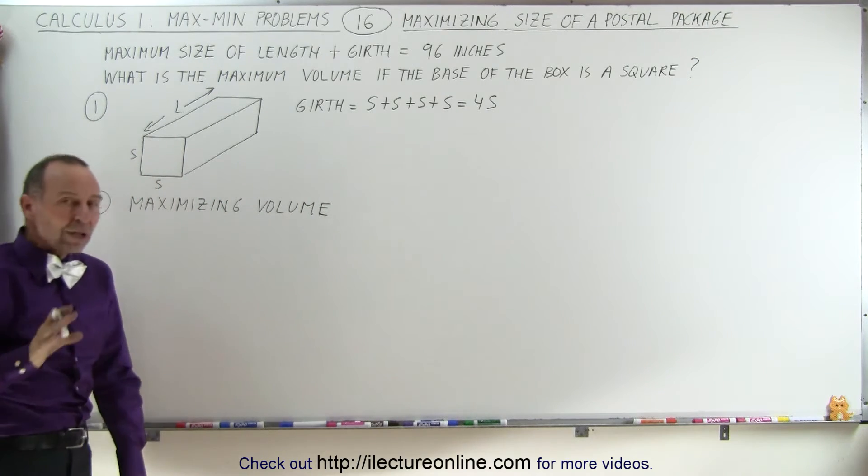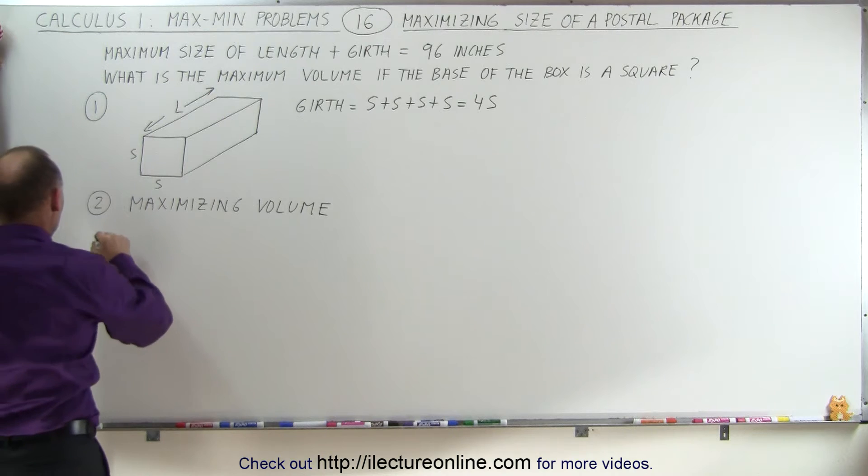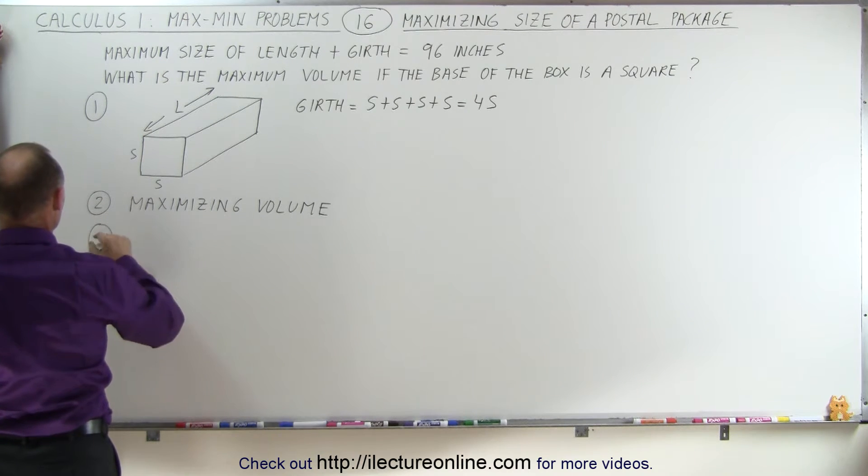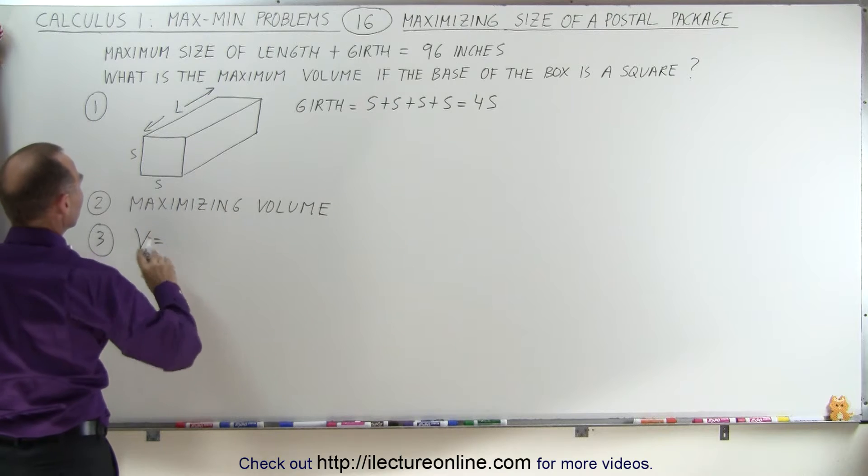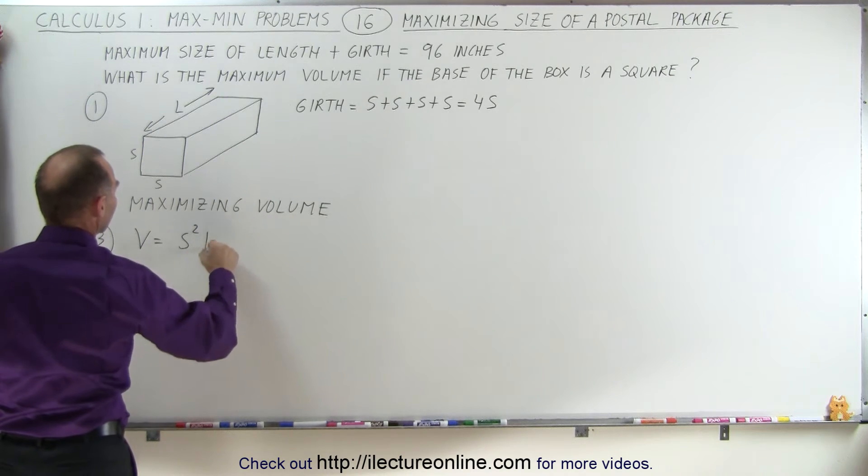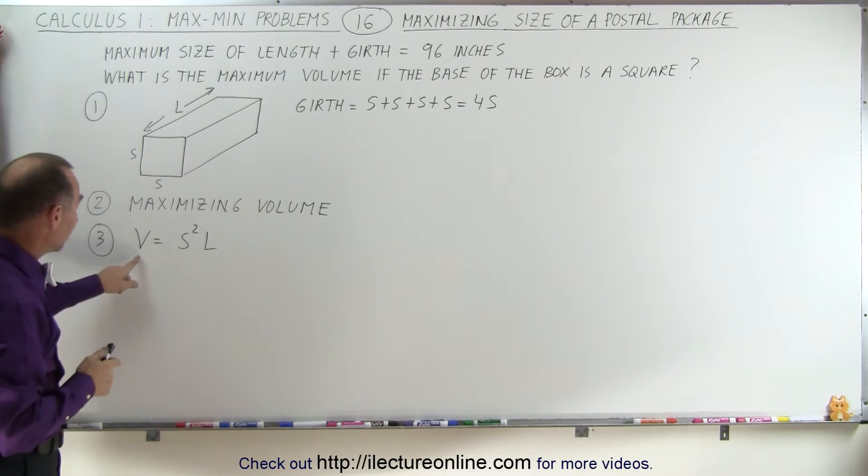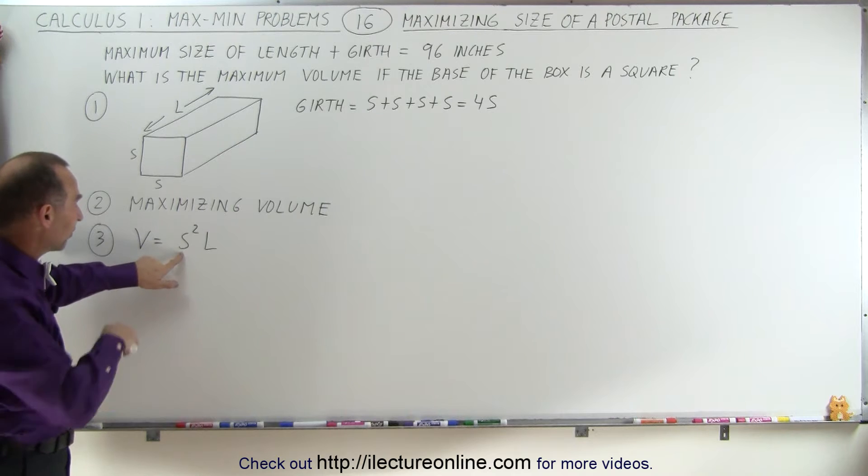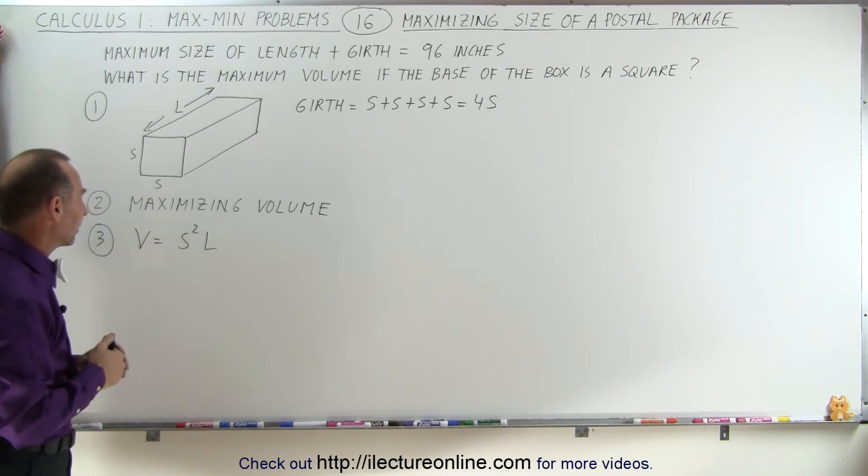Therefore, we need an equation for the volume. That's number 3. The volume equals the area of the base, which is s squared, times the length L. So V = s²L. Notice that the volume equation has two unknowns: the side of the base s and the length L.